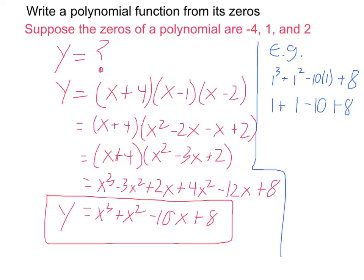So for the example of 1, we would put in 1 for x. We get 1 cubed plus 1 squared minus 10 times 1 plus 8, or 1 plus 1 minus 10 plus 8, which does in fact equal 0.